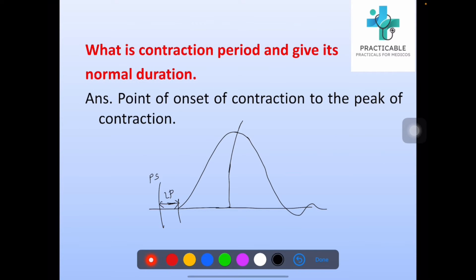What is contraction period and give its normal duration? It is the period from the point of onset of contraction to the peak of contraction. This is the contraction period. Its normal duration is between 20 to 40 milliseconds.